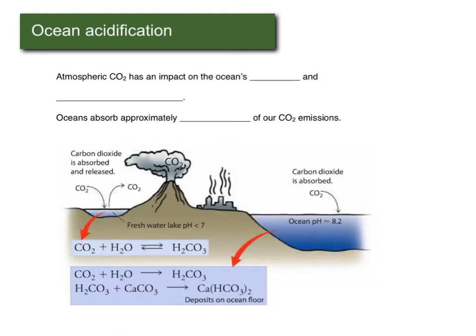Now for a review of ocean acidification. Atmospheric CO2 has a large impact on our oceans because the ocean is normally slightly alkaline — usually a pH of a little more than 8. As we add CO2 to our atmosphere, the oceans absorb approximately a third of our CO2 emissions. While that helps reduce atmospheric CO2 and global warming, it has a drastic effect on the oceans, impacting both pH and mineral composition.